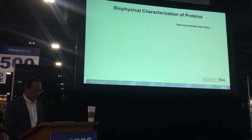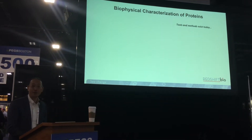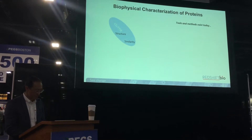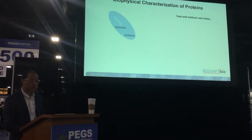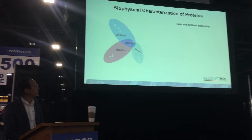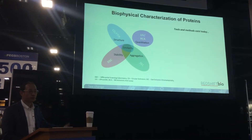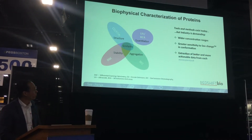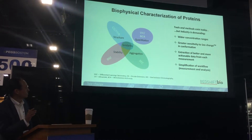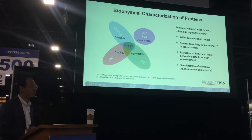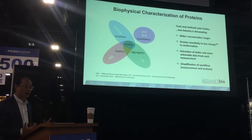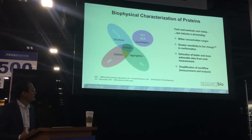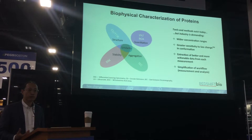For biophysical characterization of proteins, there are plenty of tools and methods that exist today. There's CD and FTIR for structure, DSC for stability, SEC for aggregation, and UV absorbance for quantitation. But the industry is always pushing and demanding more — wider concentration range, greater sensitivity to see changes in structure and conformation. They want to extract better, more actionable data from each measurement, and they want simplification of the workflow and automation.